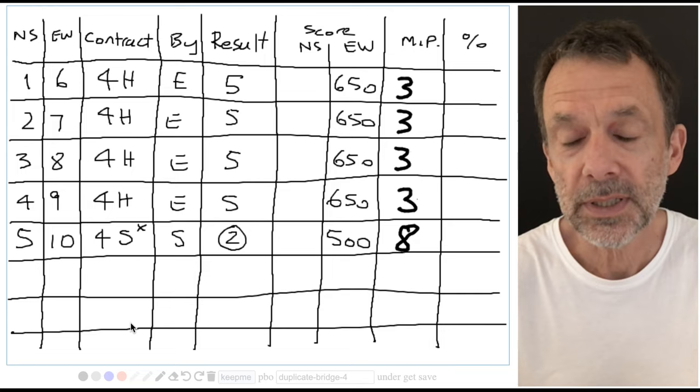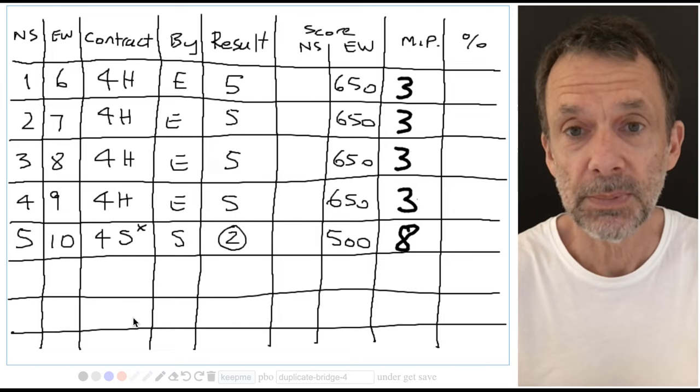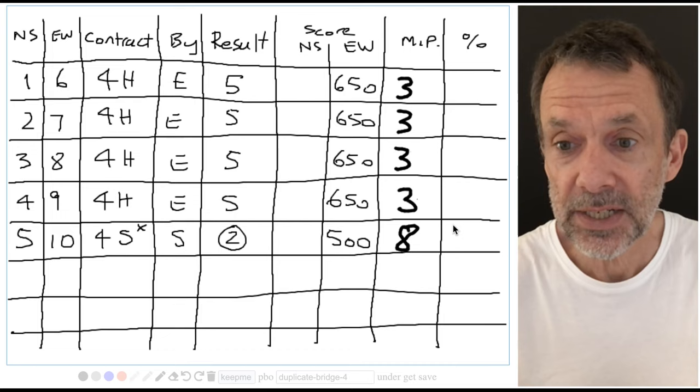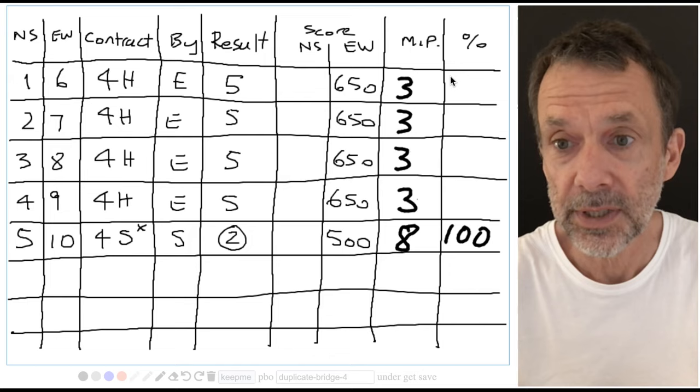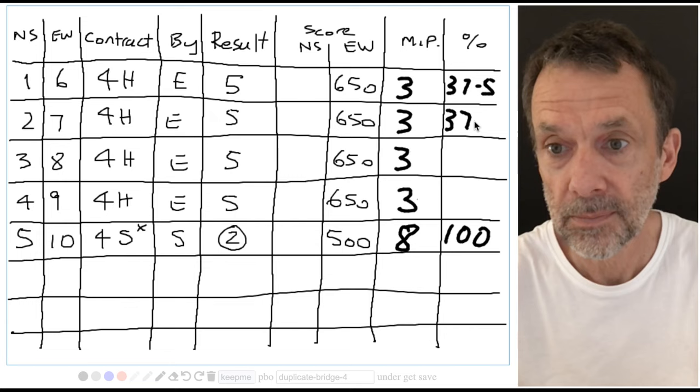These match points are also converted into a percentage. So the best we could possibly make on this hand was eight, and we in fact scored eight, so our percent score is 100%. Pair one, two, three and four were three out of eight, which is 37.5%.